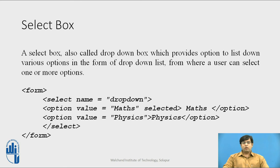Next is the select box, also called a drop down menu. It provides a list of all available options to be selected. Instead of the input tag we use a select tag, where the name attribute is set to 'dropdown' or whatever name you choose. The options inside define what menu items are available — here the options are maths and physics, and maths will be selected initially as we have given 'selected' as its attribute.